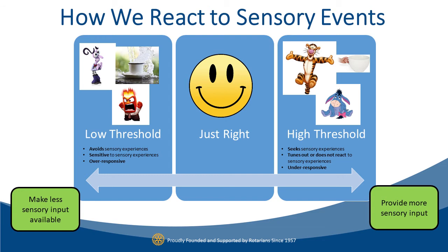Then we also have the Eeyore — someone who looks like they're tuning out and under-responsive. They may have a high pain tolerance, might not notice when their face is dirty, don't seem aware of very high or low temperatures, and might intrude into someone else's space. Going back to the big cup analogy, Eeyore still has a big cup and it's empty, but they're more passive in getting those needs met and need help to fill the cup to generate an appropriate response.